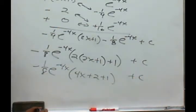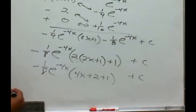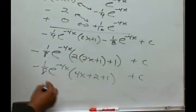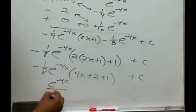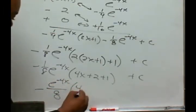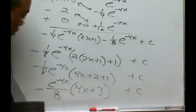Let's clean this up a little bit. We write e to the negative 4x all over 8, put the negative there, and this becomes 4x plus 3, all plus c.